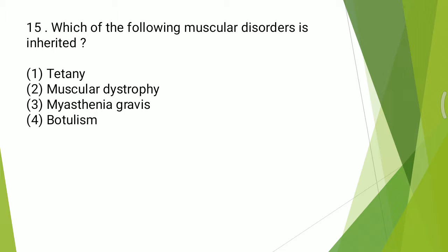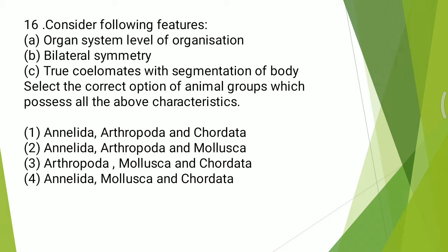Fifteenth question: which of the following muscular disorders is inherited? Options: tetany, muscular dystrophy, myasthenia gravis, or botulism? The answer is muscular dystrophy.